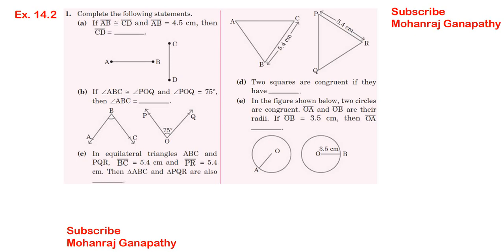X is 14.2, sum number 1. Complete the following statements. So AB is 4.5 cm and CD is equal to 4.5 cm. So AB is 5.4 cm. Then the equilateral triangle is 5.4 cm. All sides are equal. So triangle ABC and PQ are all congruent.